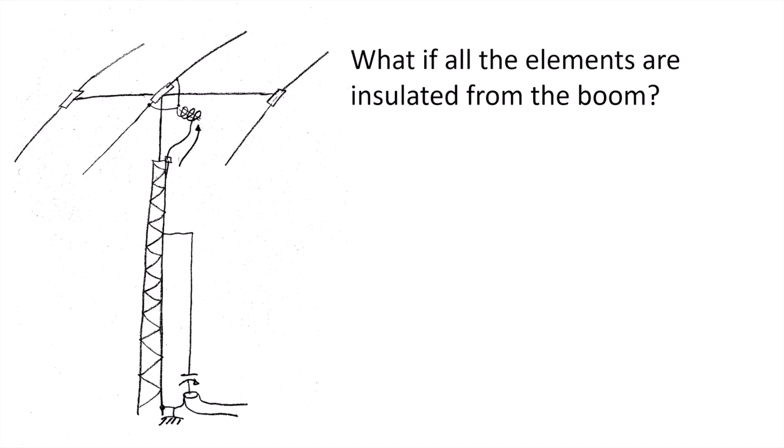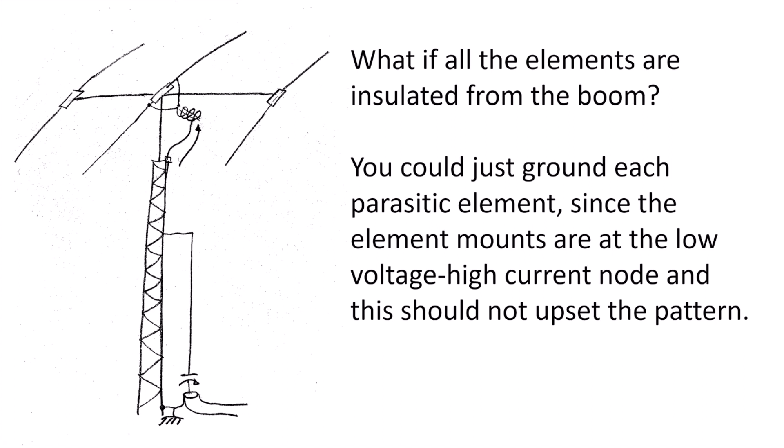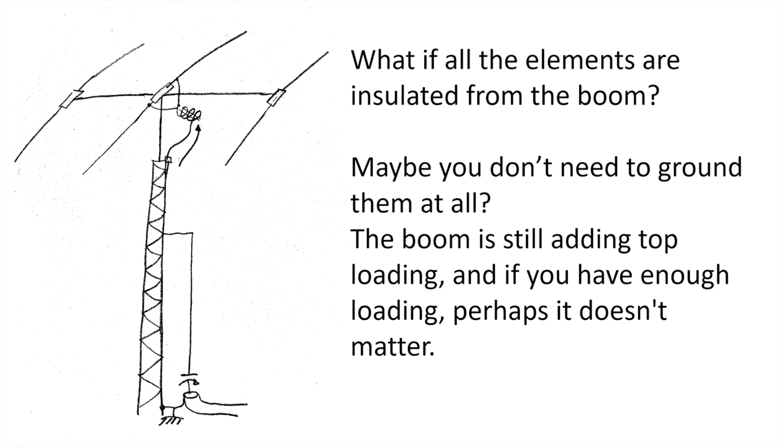So what if all of the elements are insulated from the boom? What about those other elements? You could add relays similar to the one at the driver to those elements as well. I have relays at both the driven element and the reflector of my 40 and 80 meter two element interlaced Yagi. But for me, it was really easy to do that because I already have boxes at both elements. You could maybe just ground each parasitic element, be it a number of driven elements or reflectors. Since those element mounts, even if they're insulated, they're at a low voltage, high current node, even if they're grounded at that point, they shouldn't upset the pattern. Or maybe you don't need to ground them at all. The boom is still adding a lot of top loading, and if you've bypassed the common mode choke, the driven element is now going to be adding to top loading. So perhaps it doesn't matter.